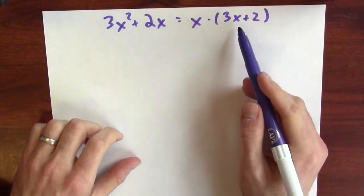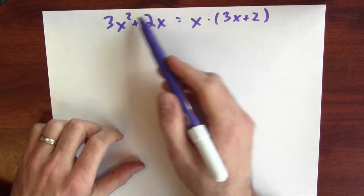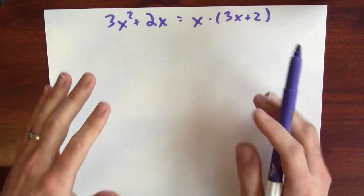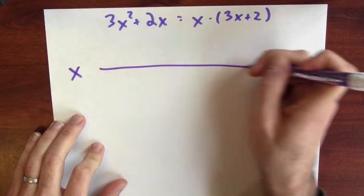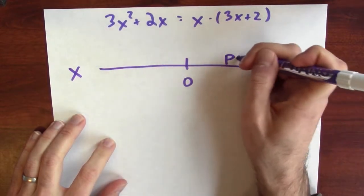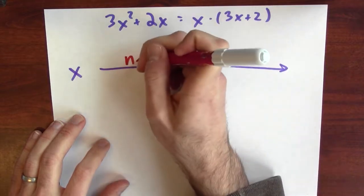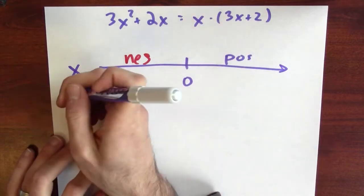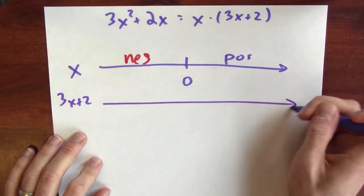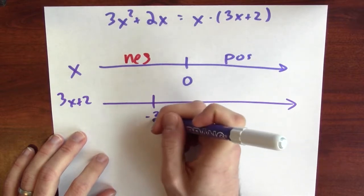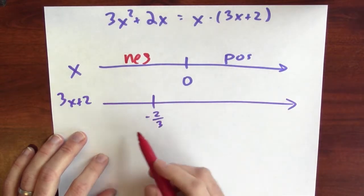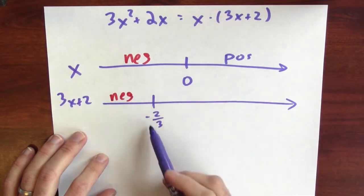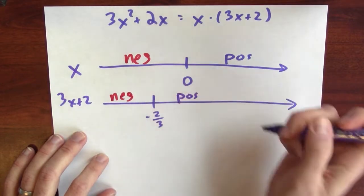Once I factor it like this, I can figure out the sign of this product by figuring out the sign of the two terms separately. To visualize this, I'm going to draw a couple of number lines. For x: x is positive when x is greater than 0 and negative when x is less than 0. For 3x plus 2: the critical point is minus 2/3. When x is less than minus 2/3, then 3x plus 2 is negative; when x is greater than minus 2/3, then 3x plus 2 is positive.